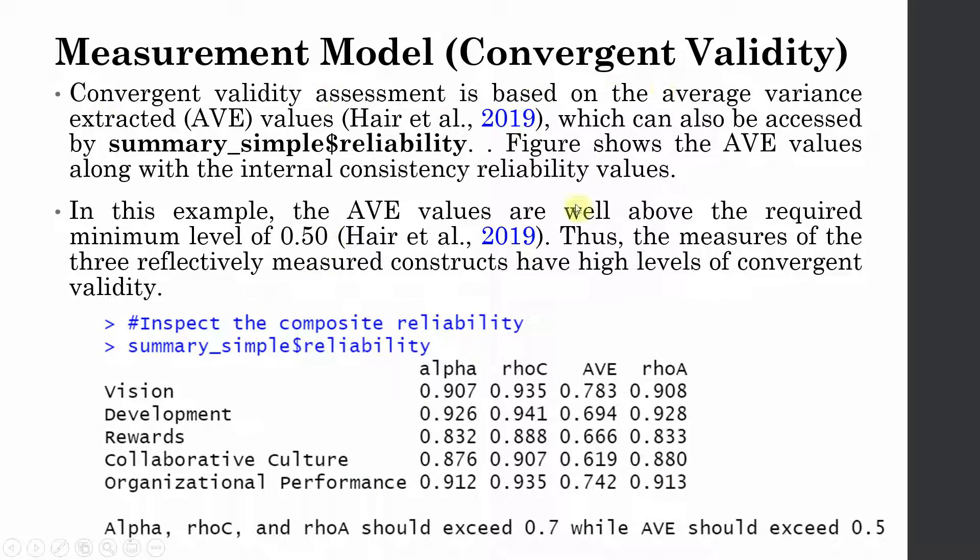How do we see convergent validity? Now we simply run this command that we did earlier. And based on this command we will have AVE values for each of the constructs in the study. Now all of them are well over the required limit of 0.50. This means that convergent validity for all these constructs is established. This shows that the items are converging to measure the underlying construct. Since AVE is greater than 0.50 this means that the construct is capturing good enough variance of its indicators. And we can say that convergent validity is established.